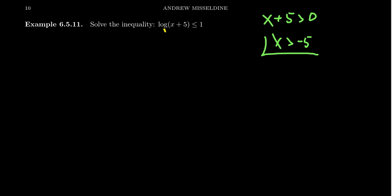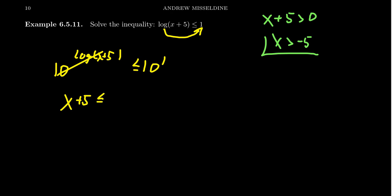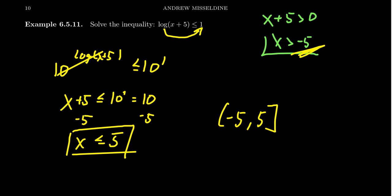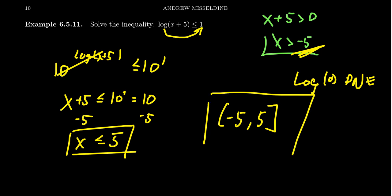To solve the inequality, switch to exponential form by raising 10 to both sides. On the left, 10 to the log of (x plus 5) cancels, giving x plus 5. On the right, 10 to the first is 10. So we get x plus 5 is less than or equal to 10, then subtract 5 from both sides to get x is less than or equal to 5. Now combine the two statements: the inequality says x ≤ 5, and the domain says x > negative 5. Putting these together gives the interval from negative 5 to 5. We include positive 5 because it gives equality, which is fine. We exclude negative 5 because that would require taking the log of zero, which is undefined.